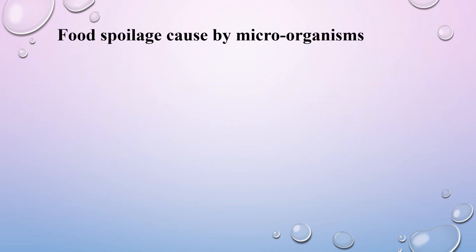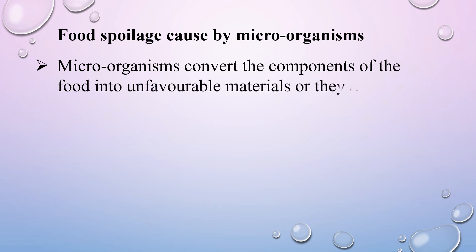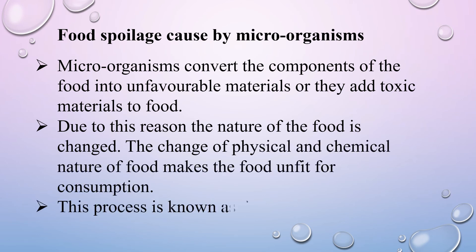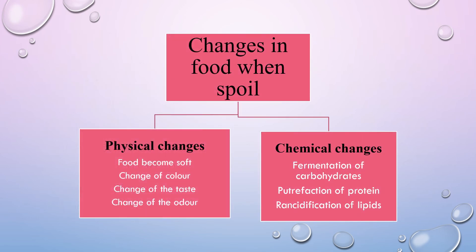The third adverse effect is food spoilage caused by microorganisms. Microorganisms convert the components of food into unfavorable materials or add toxic materials to food, changing its physical and chemical nature and making it unfit for consumption — this process is known as food spoilage. Physical changes include food becoming soft, change of color, change of taste, and change of odor. Chemical changes include fermentation of carbohydrates, putrefaction of protein, and rancidification of lipids.